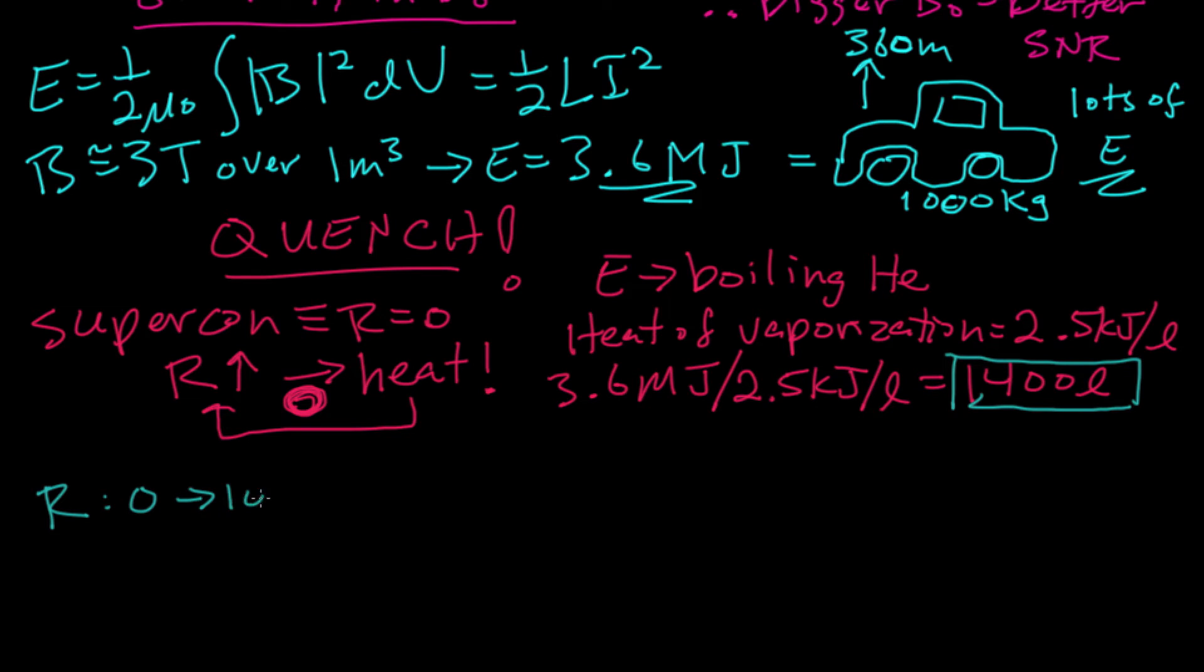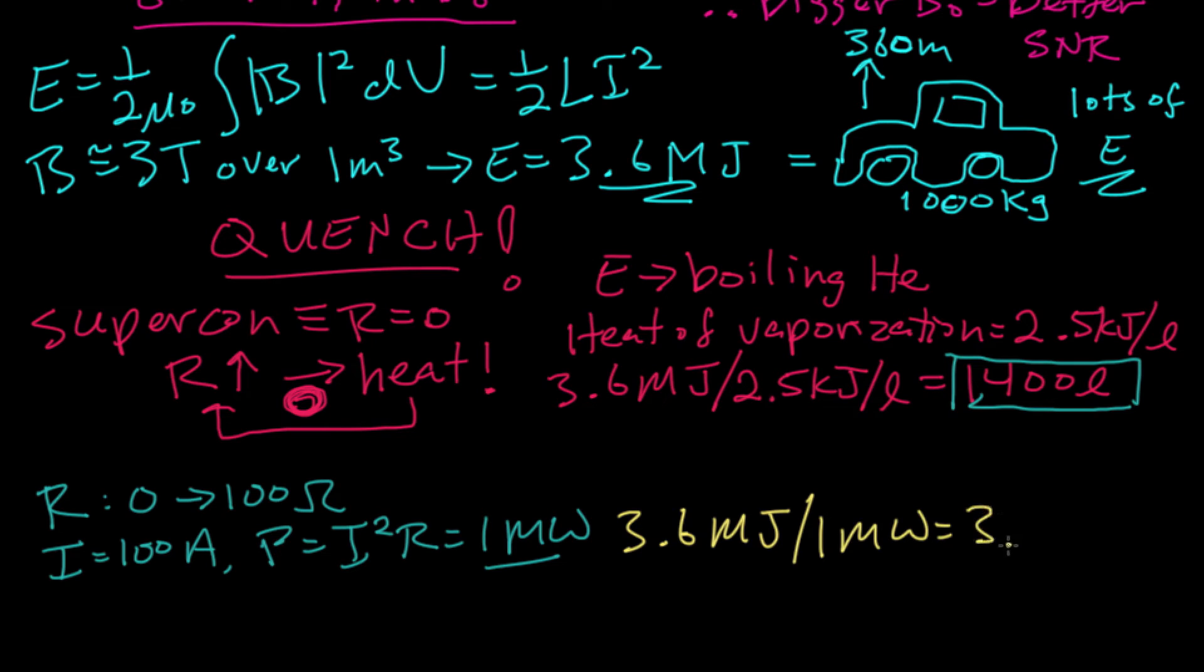When the coil becomes non-superconducting, the resistance goes from zero to about 100 ohms for that 10 kilometers of wire. For 100 amps of current, the power dissipated in that 100 ohms is about a megawatt. So roughly speaking, that 3.6 megajoules dumped at a rate of 1 megawatt can dissipate in about 3.6 seconds. It's slower than that because the current is decreasing as the quench is occurring. But roughly speaking, that 1,400 liters of liquid helium is converted into about 1,000 times that, about 1.4 million liters of helium gas in a matter of seconds. So the management of the stored energy is one of the main engineering limitations to how high the main field can be.